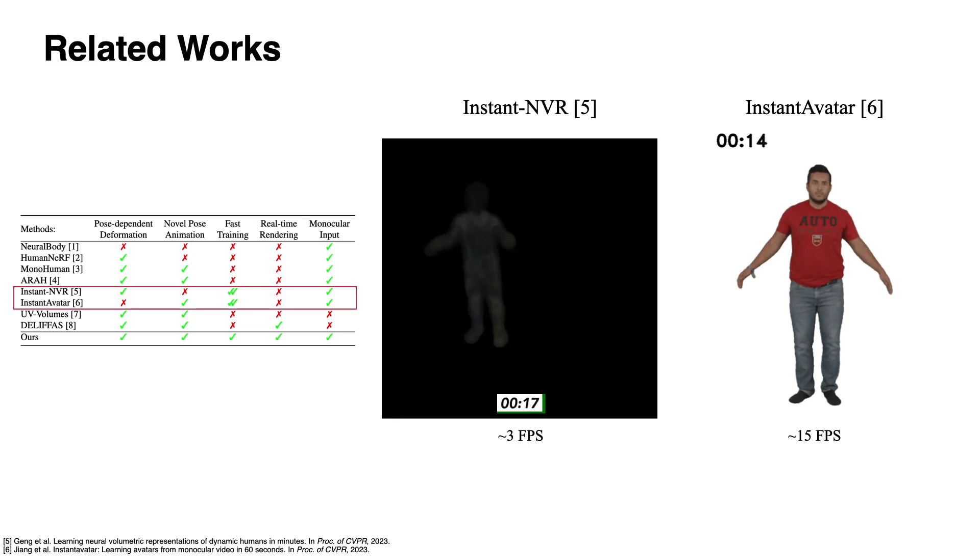Instant NVR and Instant Avatar focus on instant training within several minutes. Compared to these methods, our approach renders at higher frame rate, yields better rendering quality, and models realistic pose-dependent cloth deformation.